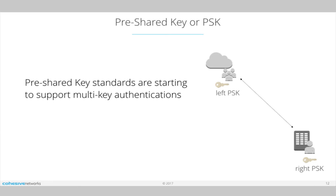Today in most implementations, we're starting to see that the standard does support effectively your side having one secret and the other side having another secret. So you effectively would have — think of it as if the cloud is up and to the left and the data center is down and to the right — effectively a left PSK and a right PSK.